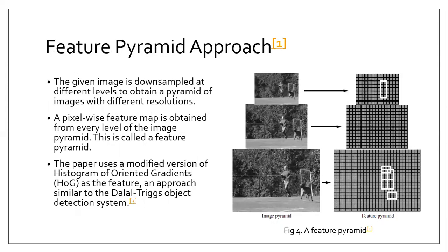The paper adopts a feature pyramid approach. Given an image, the image pyramid is obtained by continuous smoothing and subsampling to get images at different resolutions. For this image pyramid, a corresponding feature pyramid is obtained. A pixel-wise feature map is obtained from every level of the image pyramid — this is called the feature pyramid. The feature pyramid used in this paper uses a modified version of the Histogram of Oriented Gradients (HOG) as features, similar to the Dalal-Triggs object detection system.